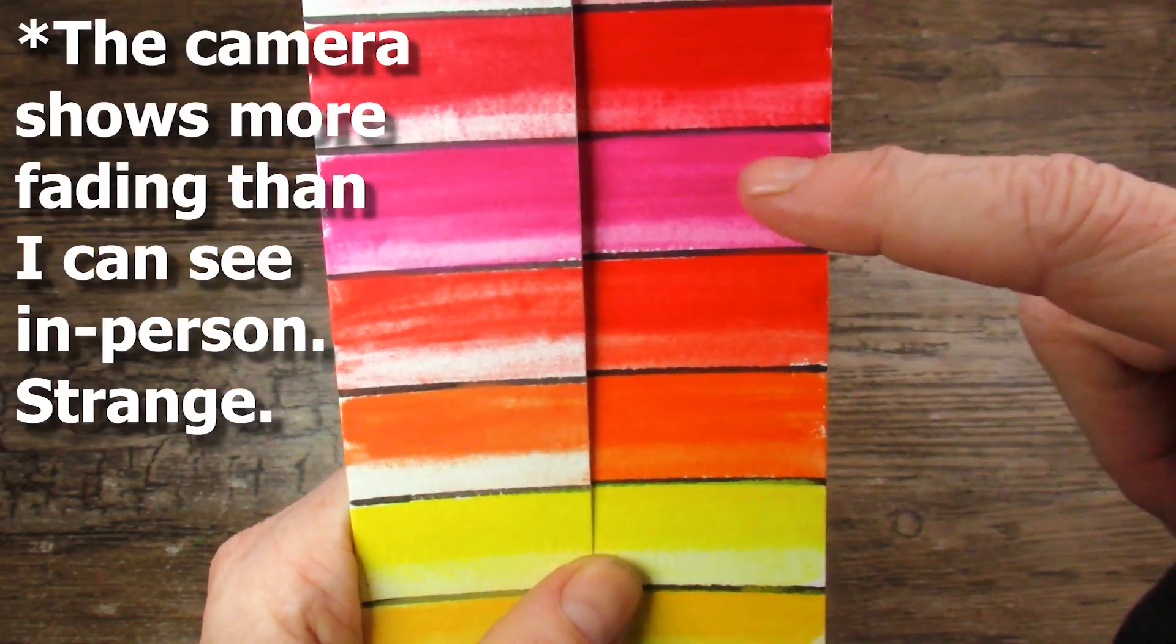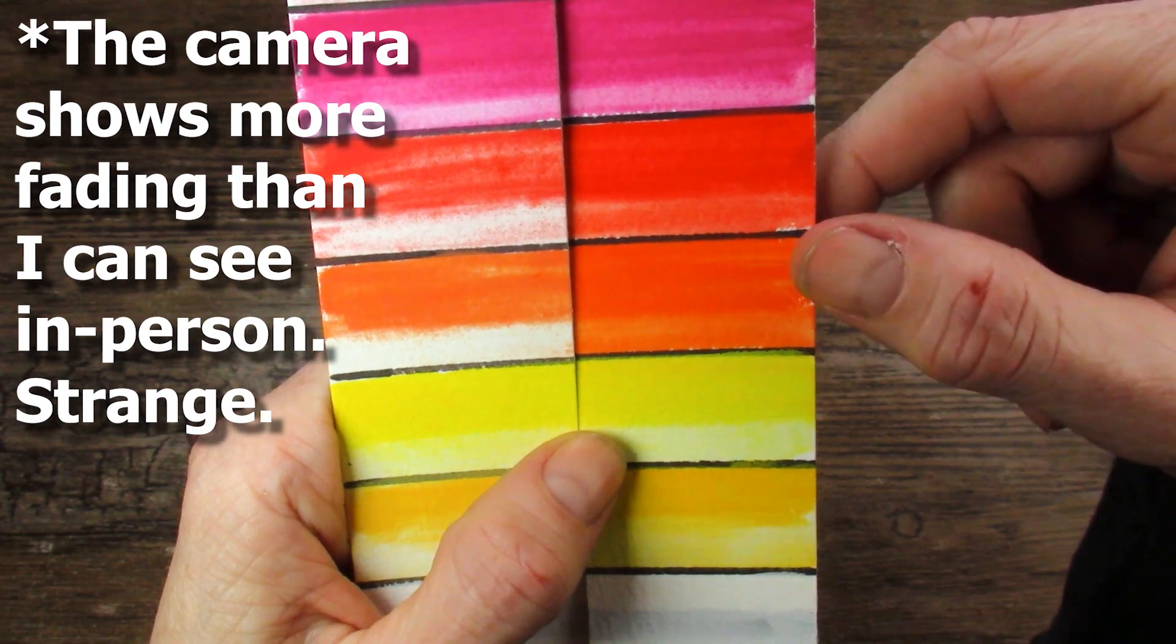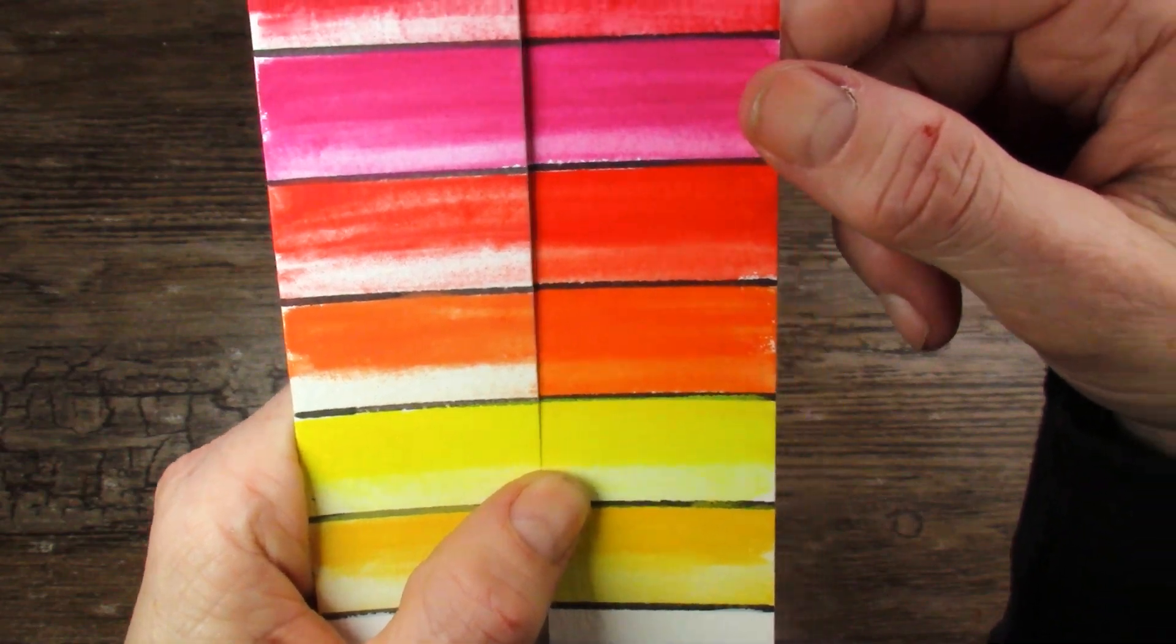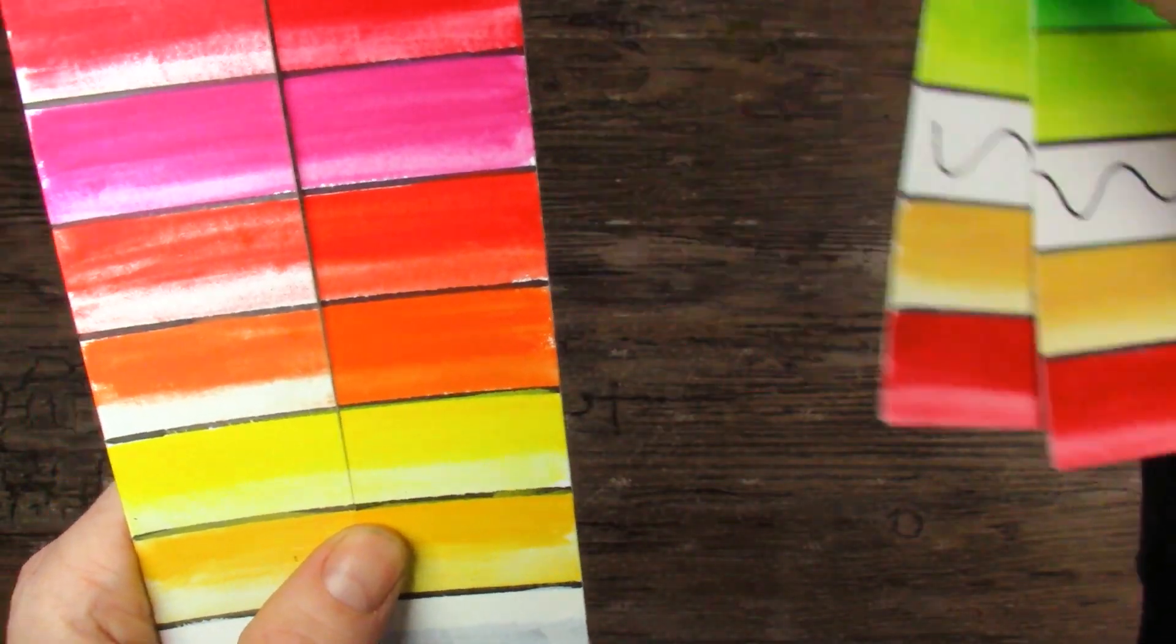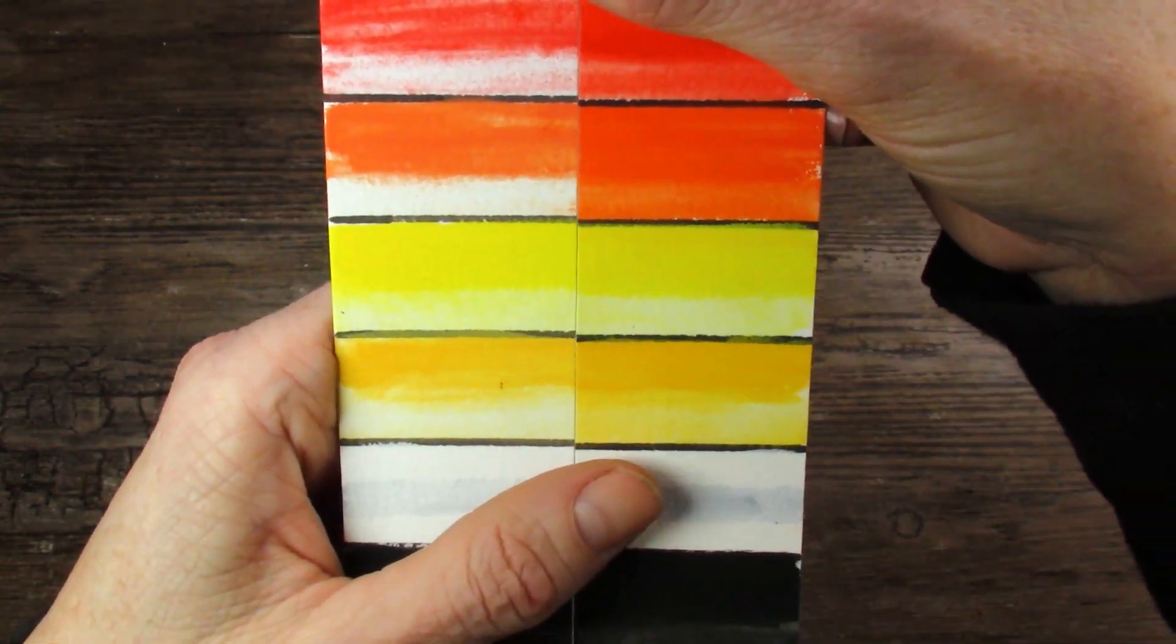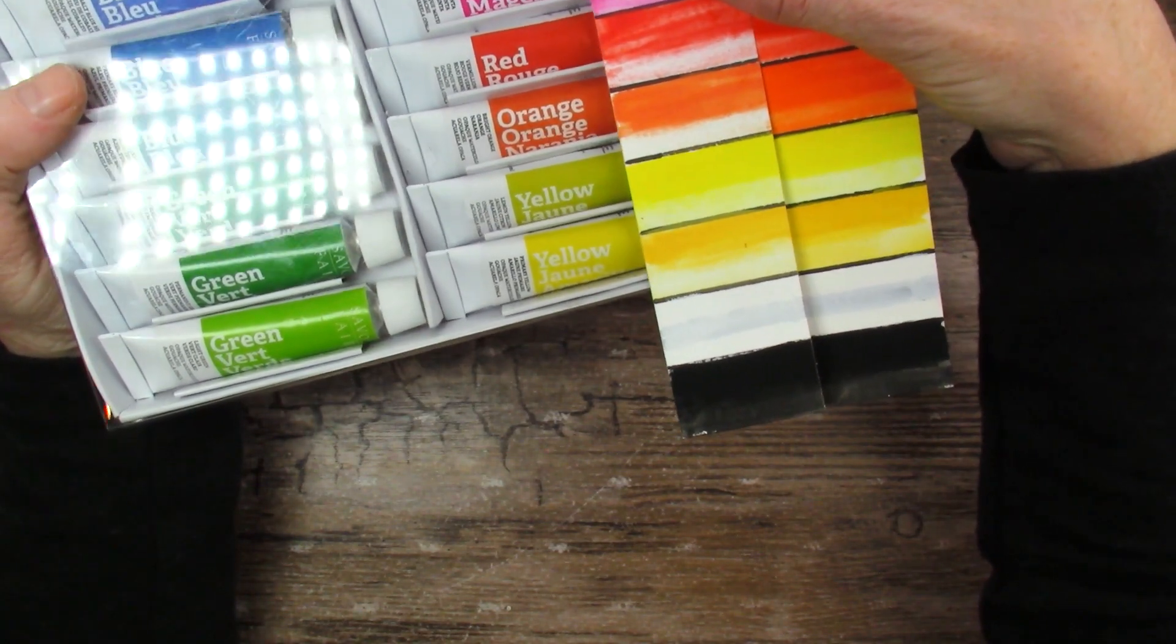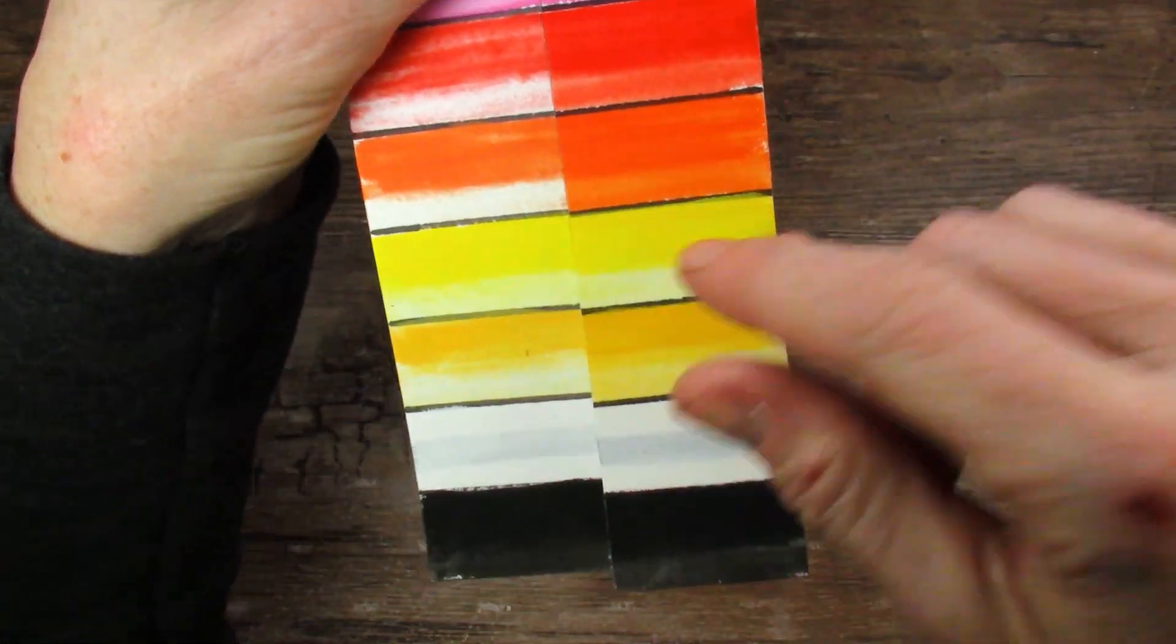This color here didn't fade at all. The orange faded a lot. Both oranges faded way too much, which is sad. There's such pretty oranges. I guess you'll have to make your own orange with this red and this yellow, because this yellow did not fade at all either, but the one below it did.